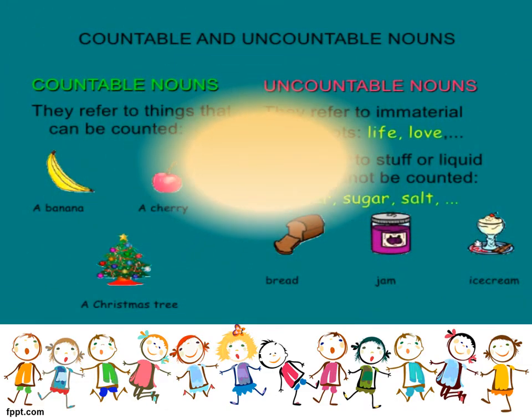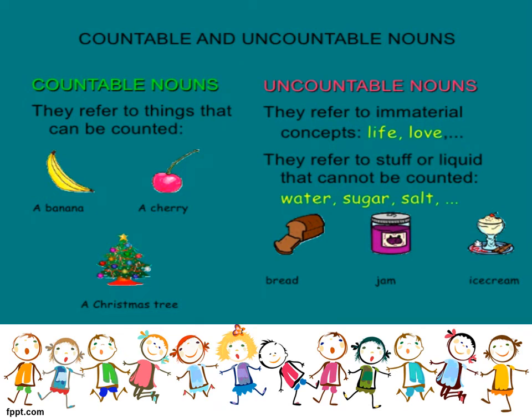Let's take a look at the screen. This is countable nouns and uncountable nouns. As you can see, countable nouns refer to things that can be counted — a banana, a cherry, or a Christmas tree. But uncountable nouns refer to immaterial concepts. Countable nouns are things we can easily count, like a banana, a cherry, or a Christmas tree. Uncountable nouns refer to non-material things like life or love, or physical substances like water, sugar, or salt. Nobody says 'one water' or 'one sugar,' right?